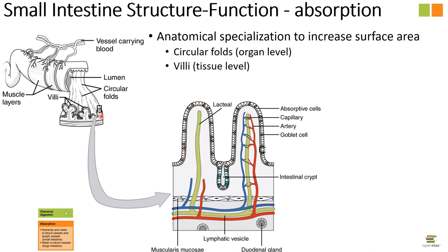If you were to cut the small intestine open and look inside, you would see a rugged surface inside reflecting the circular folds, which increase surface area. If we zoom in on one of these folds, we can see an additional specialization at the tissue level. Looking at a small section at the tissue level, we can see things called villi — or fingers — projecting out into the lumen of the tubule. Rather than just a flat surface, we have these large projections going into the lumen, which increase surface area. These structures, composed of multiple individual cells from the lining, are called a villus (singular) or villi (plural).